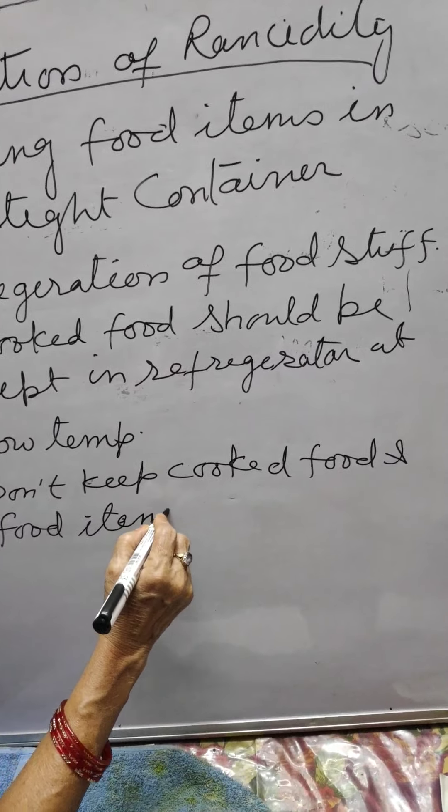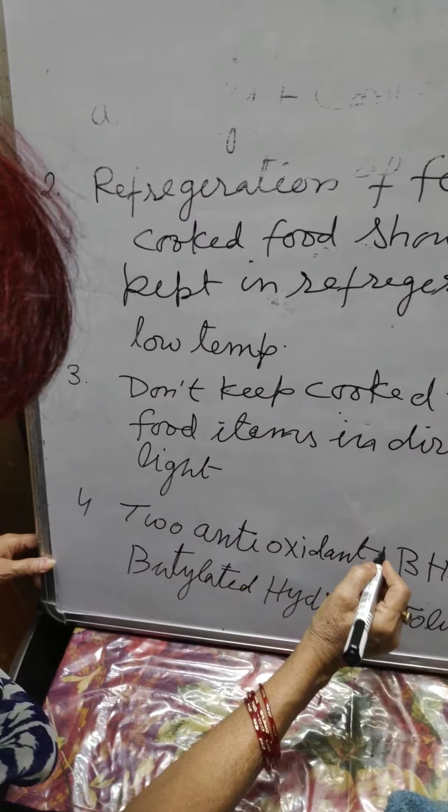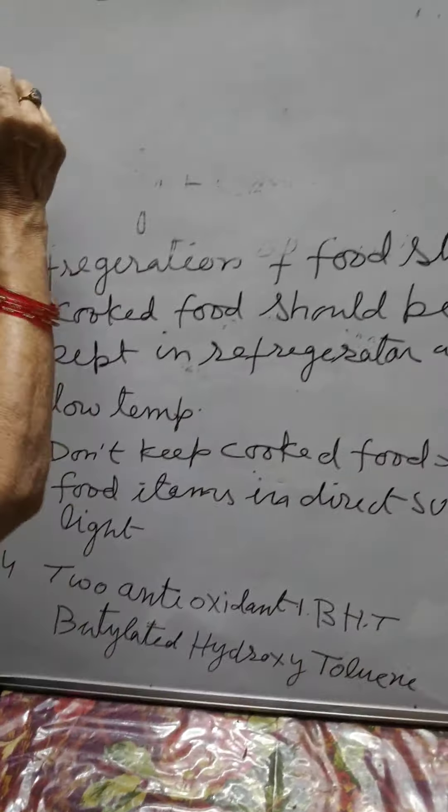Fourth, there are two antioxidants. First, BHT — butylated hydroxy toluene. Second, BHA — butylated hydroxy anisole.